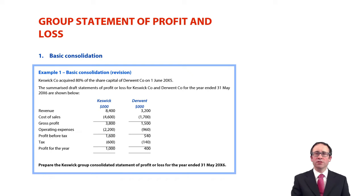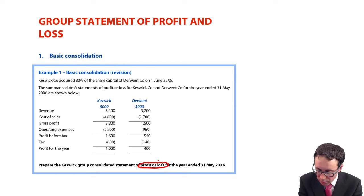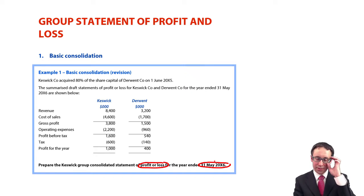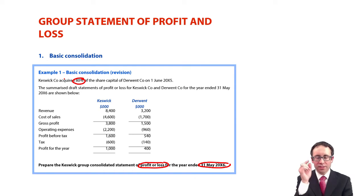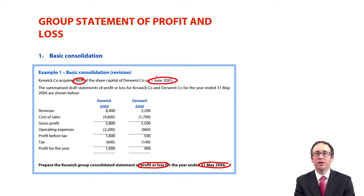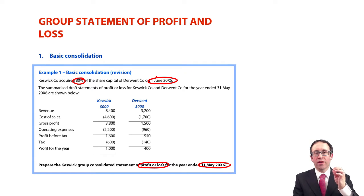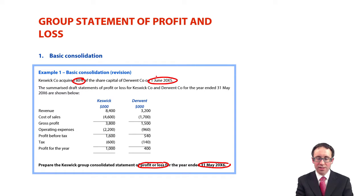Let's go through and do a little bit of revision from the days of financial accounting and have a look here, whereby we are asked to prepare the consolidated statement of profit or loss for the 31st of May 20x6. Keswick owns 80% of the share capital of Derwent, so Keswick is the parent and Derwent is the subsidiary. It was acquired on the 1st of June 20x6, which is the very start of the accounting period, so we're going to consolidate all of the results of Derwent for the full 12 months — there is no mid-year acquisition. The summarized draft statement of profit or loss for Keswick and Derwent for the year ended May 20x6 is shown below.